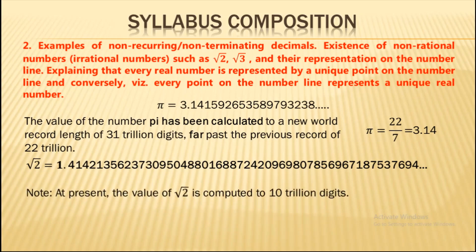At present, the value of √2 has been computed to 10 trillion digits. Pi has been calculated to 31 trillion digits and √2 to 10 trillion digits. As a homework, I'd like you to write in the comments: how many zeros are there in 1 trillion?